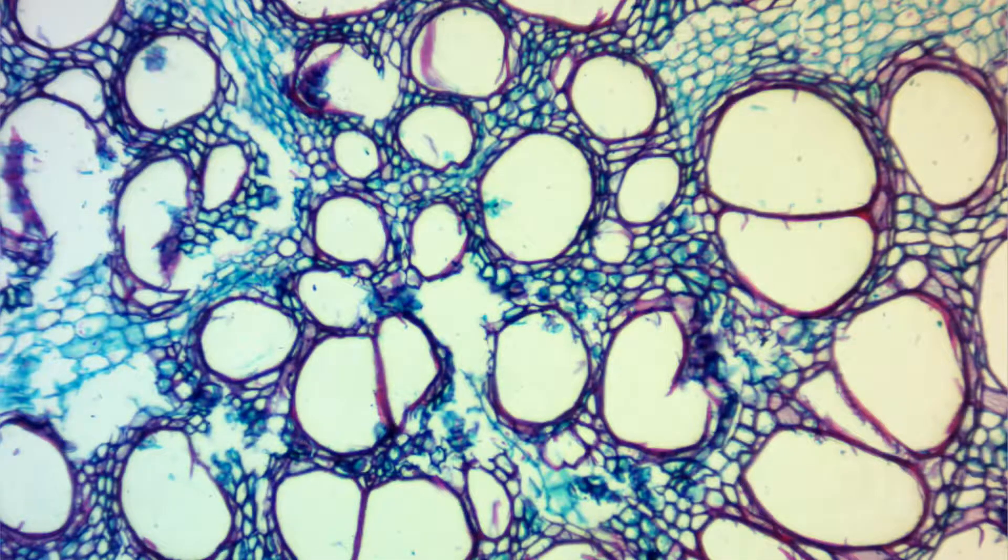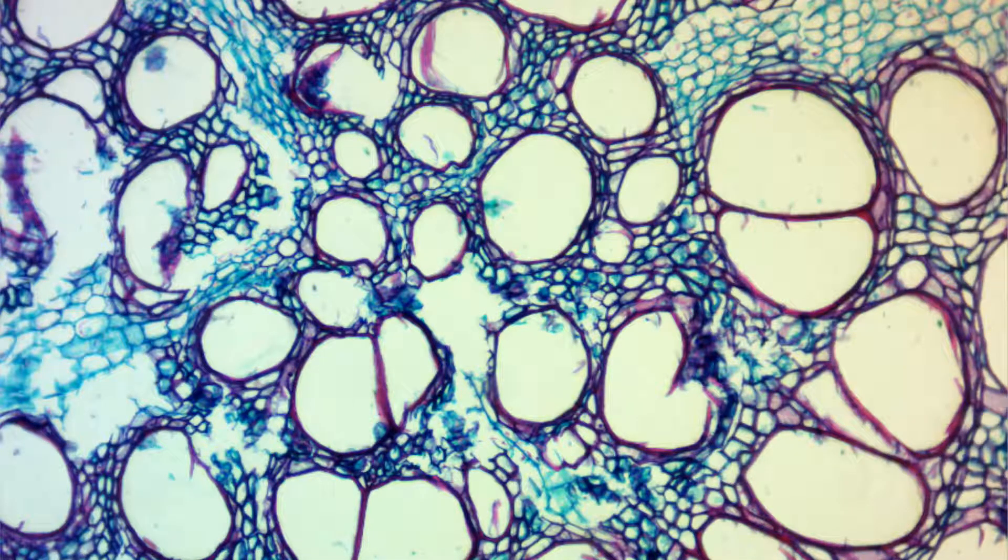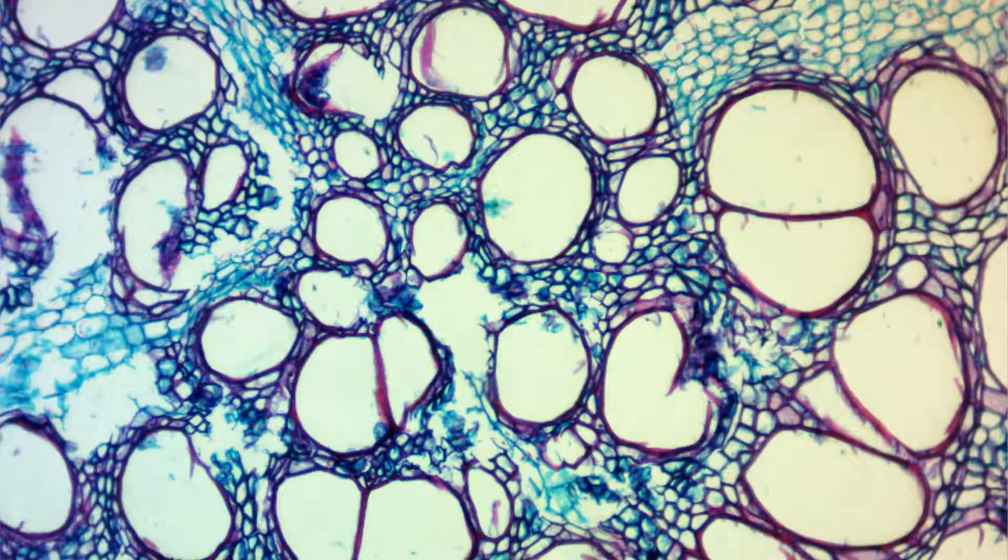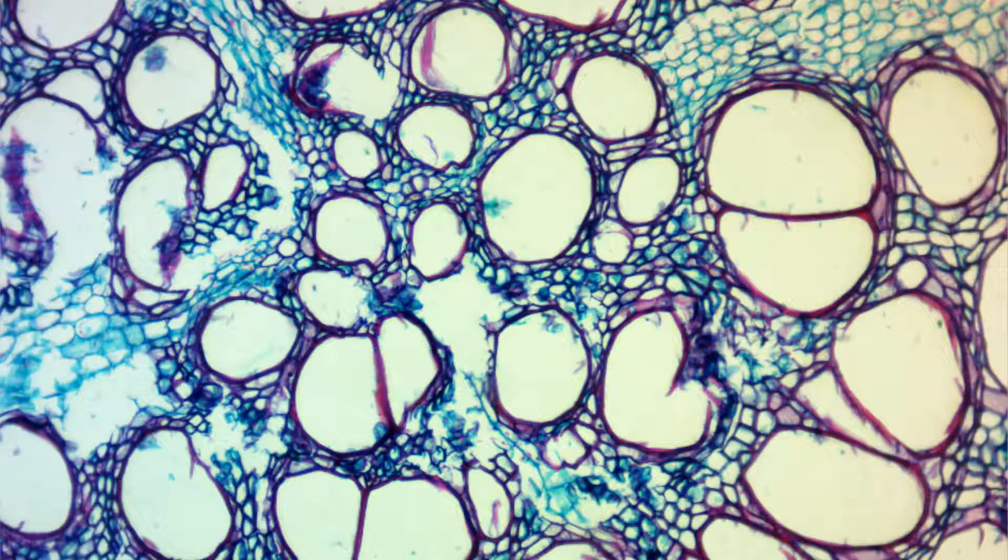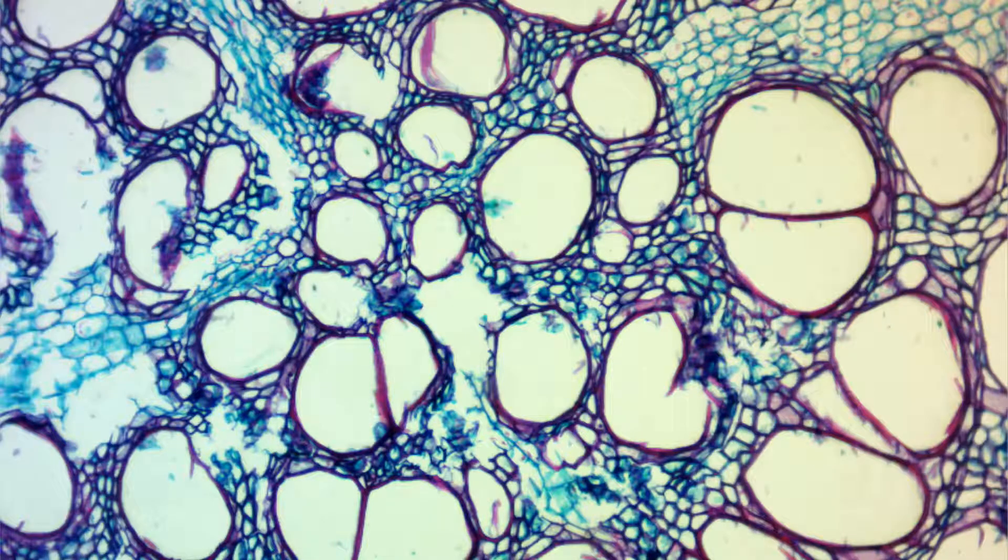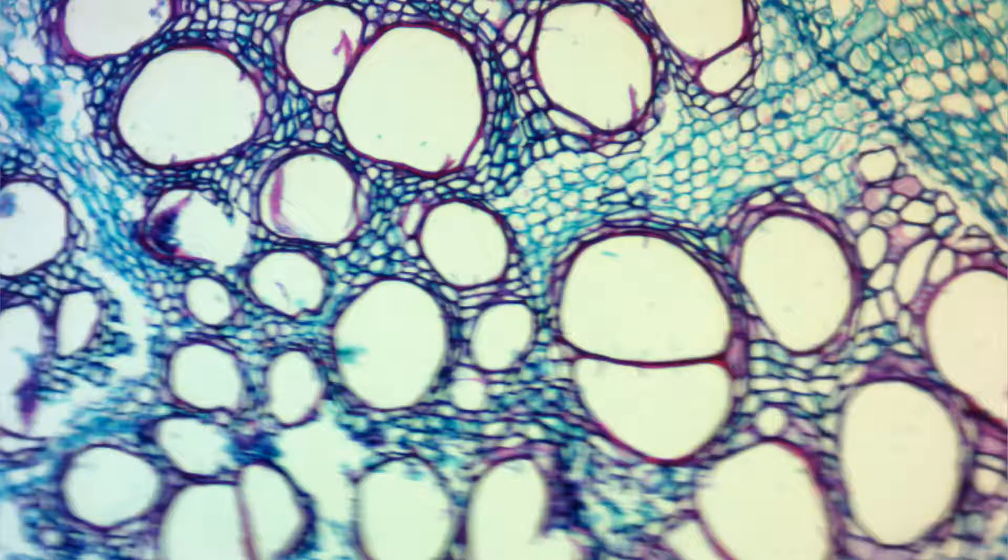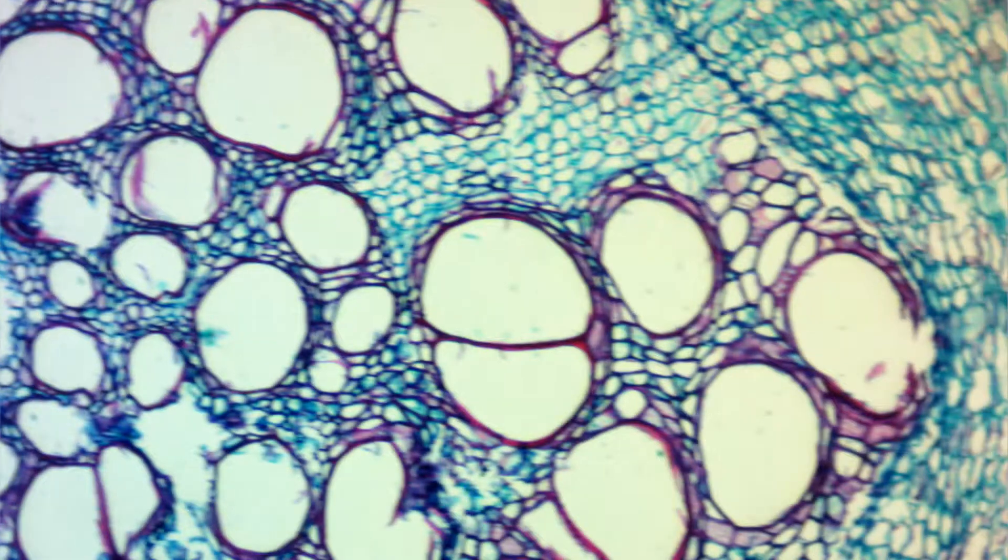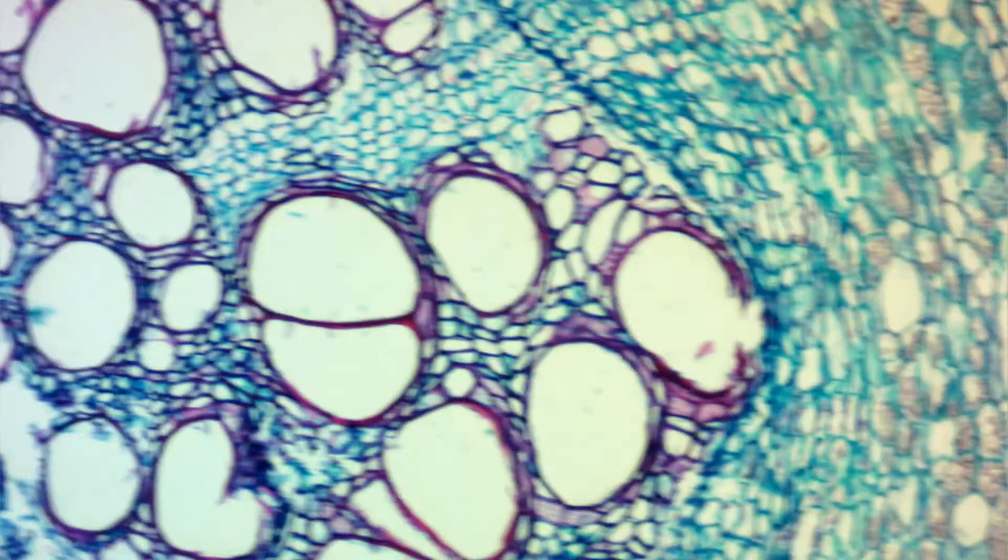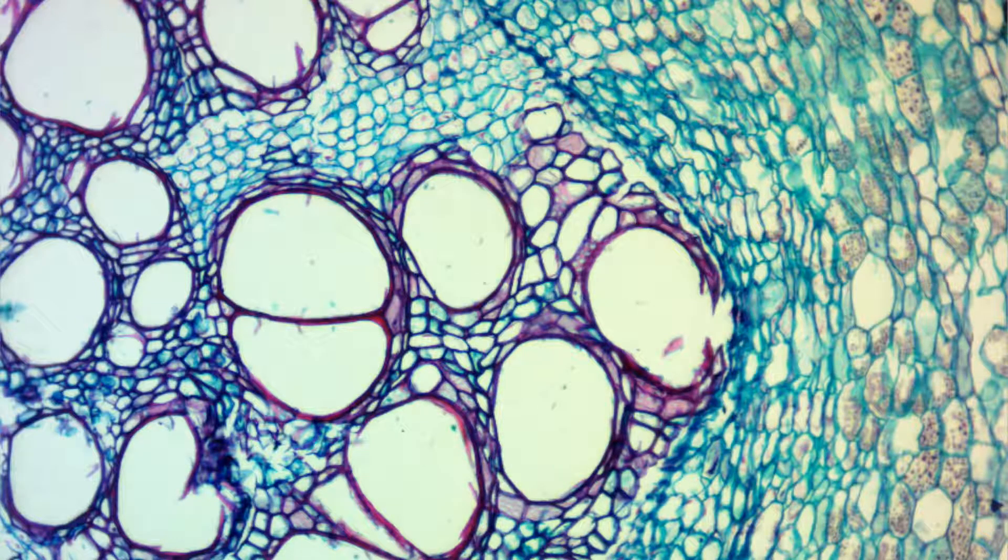1,157. Why, if we break a pea shell across, do we discover a transparent membrane which may be removed from the green cells underneath? Because we separate from the cellular or fleshy part of the shell the membrane which forms the epidermis and answers to the skin of the animal body.